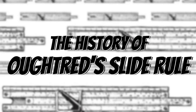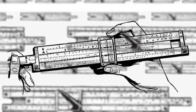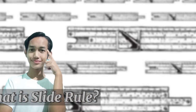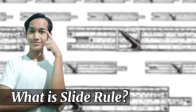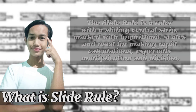The history of Orchard's slide rule. What is a slide rule? The slide rule is a ruler with a sliding central strip, marked with logarithmic scales and used for making rapid calculations, especially multiplication and division.